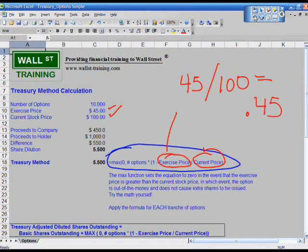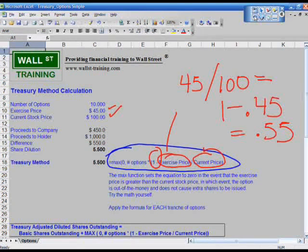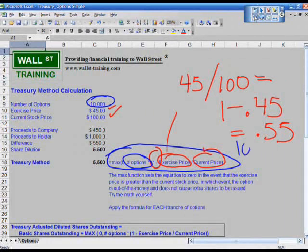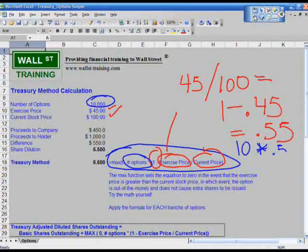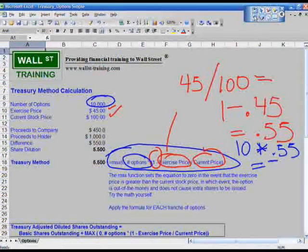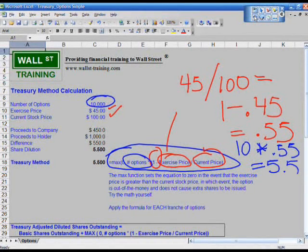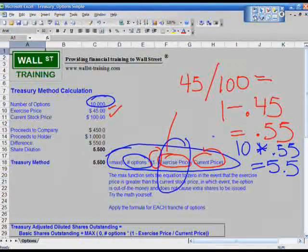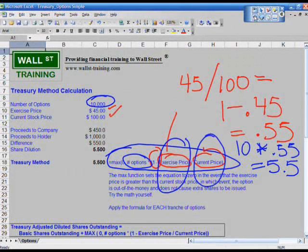Now, let's take a look at the next part of this equation. We have 1 minus this particular quotient. So 1 minus that, 1 minus .45 equals .55. Now, how many options do we have? We had 10 options. So, now you take 10 options, multiply it by .55, and what do you have? You have 5.5 shares. That is how you would use this formula. And all you need to do is input the exercise price and input the current price.